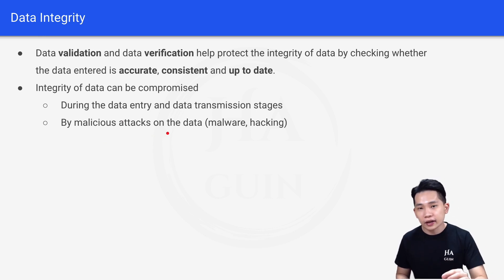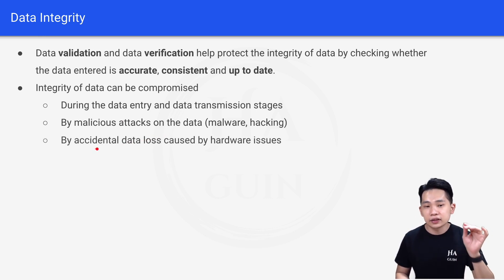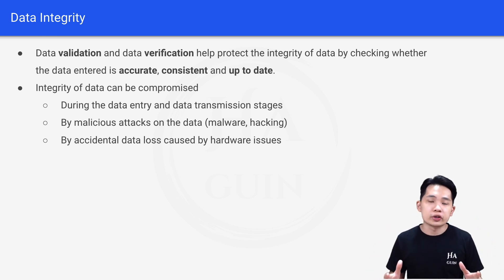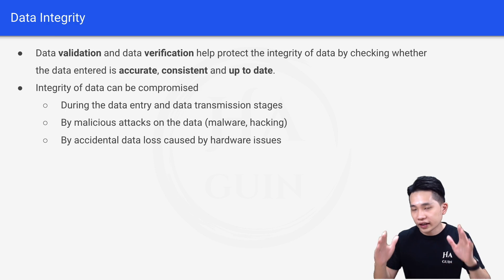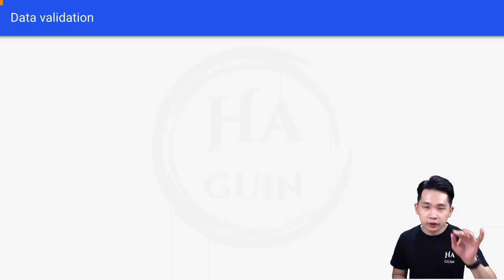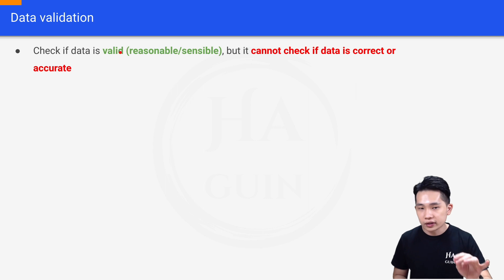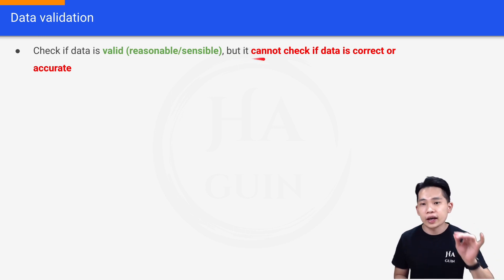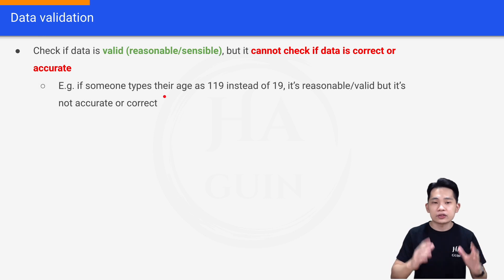Data integrity can also be compromised by malware and hacking, or by accidental data loss caused by hardware issues. For this video we'll look at different methods of data validation to protect the integrity of data. Data validation is used to check if data is valid — meaning we are checking whether the data is reasonable or sensible.